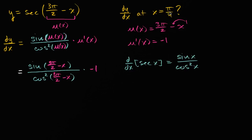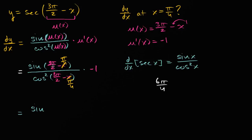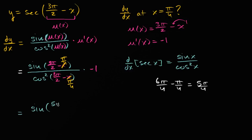Now we want to evaluate at x equals pi over four. So this is going to be sine of three pi over two minus pi over four. With a common denominator, that is six pi over four — the same thing as three pi over two — minus pi over four, which equals five pi over four. So it's sine of five pi over four over cosine squared of five pi over four, times negative one.